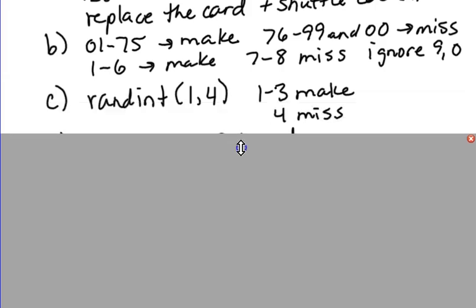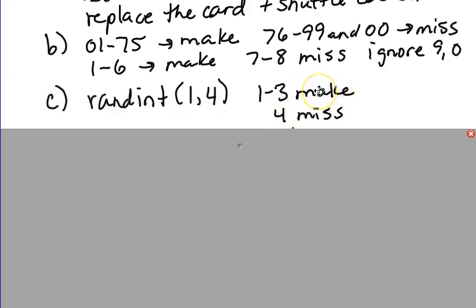On the calculator, since you only need four, you're looking at 25% here and 75%, you could just use four digits. And numbers 1 through 3 could represent making a free throw, and 4 could represent missing.